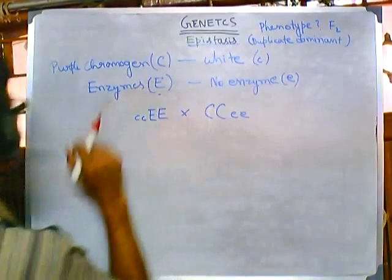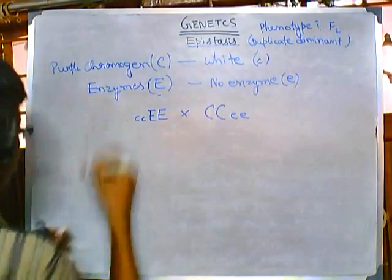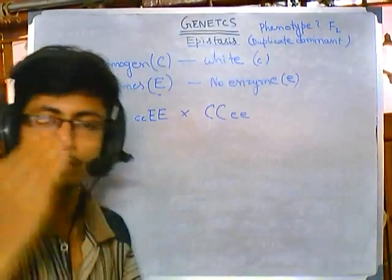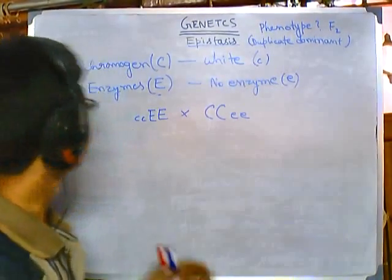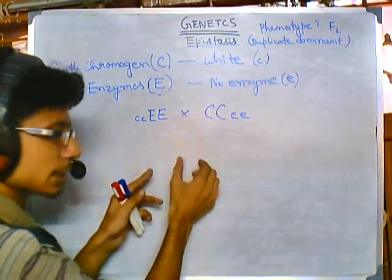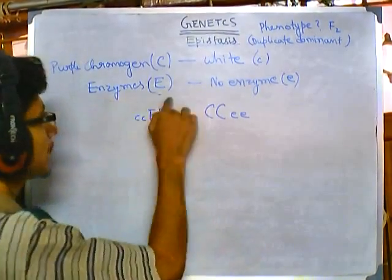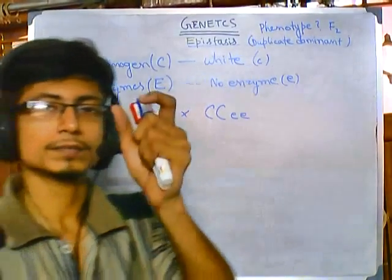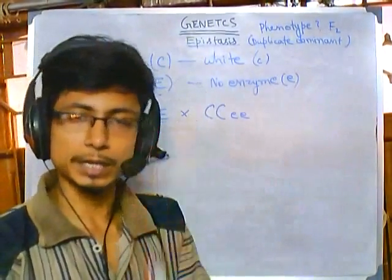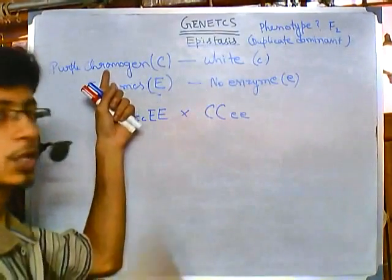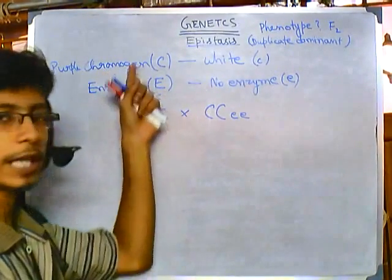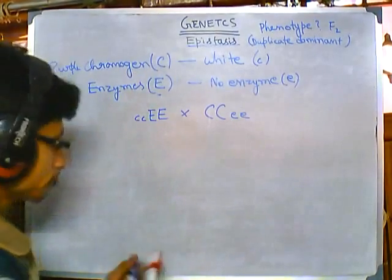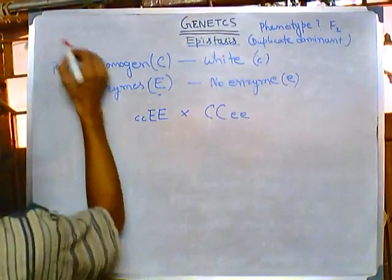A very important point about this question: enzymes are required for the coloration. If you go through the chromogen production pathway, there are different chemical mediators being converted into different forms utilizing enzymes, to finally give us the chromogen. So there are different steps of enzymatic reaction to get this purple chromogen — you must have enzymes for the completion of this process.